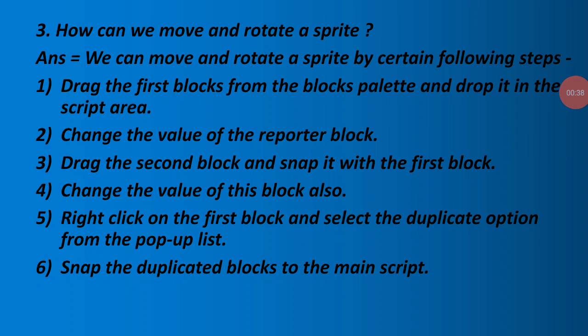Question 3: How can we move and rotate a sprite? We can move and rotate a sprite by following steps. First, drag the first blocks from the blocks palette and drop it in the script area. Second, change the value of the reporter block. Third, drag the second block and snap it with the first block. Fourth, change the value of this block also. Fifth, right click on the first block and select the duplicate option from the pop-up list. Sixth, snap the duplicated blocks to the main script.